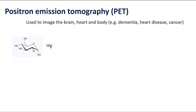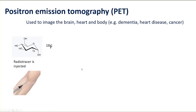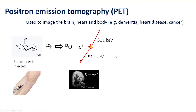As we know, positron emission tomography is used to image the brain, the heart, and the body — for example, to look at dementia, heart disease, or cancer — often using fluorine-18-labeled compounds such as fluorodeoxyglucose. This radiotracer is injected into the bloodstream of the patient under study, and the fluorine-18 decays to oxygen-18 with emission of a positron, hence positron emission tomography.